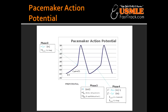Describe phase 4 of the pacemaker action potential. In phase 4, there is slow diastolic depolarization. The membrane potential spontaneously depolarizes as sodium conduction increases. This is what accounts for the automaticity of the SA and AV nodes.